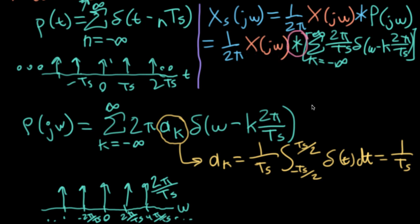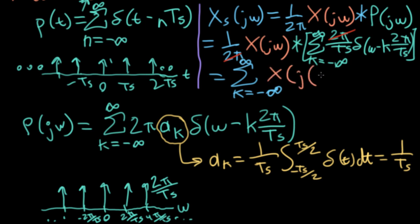Convolving with a delta corresponds to a shift. I can take the convolution with big X of j omega and pull it through the sum. Also, this 2π here cancels with the other 2π. So what I'm left with is a sum of copies of big X of j omega, written as X of j times the quantity omega minus k times 2π over capital TS, with a 1 over TS sitting out in front.